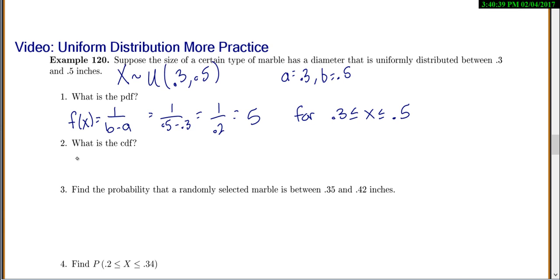Now to find the CDF, you just plug everything into that formula. The formula for that is x minus a over b minus a. So x minus 0.3 over 0.5 minus 0.3, or x minus 0.3 over 0.2. So we found the CDF. And again, all we have to do is plug everything into the formulas that they give us for uniform distributions.